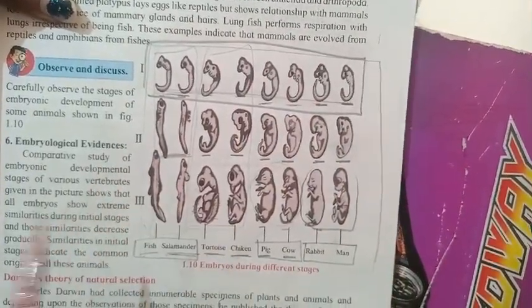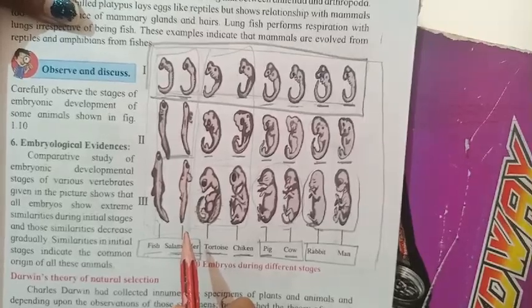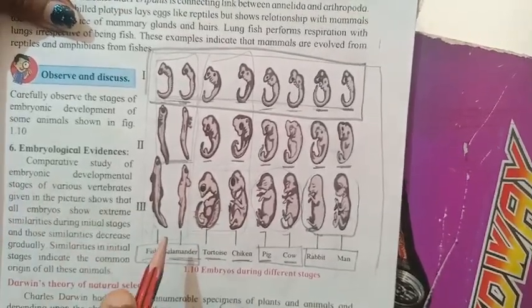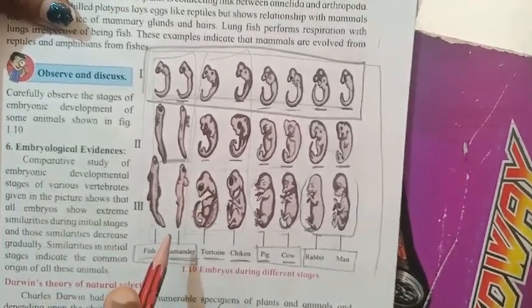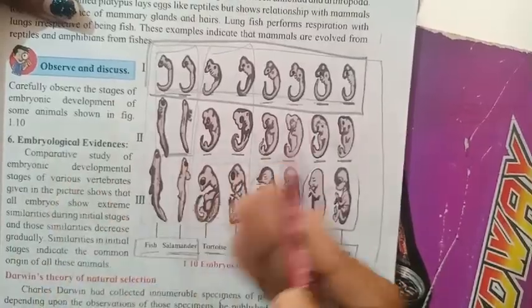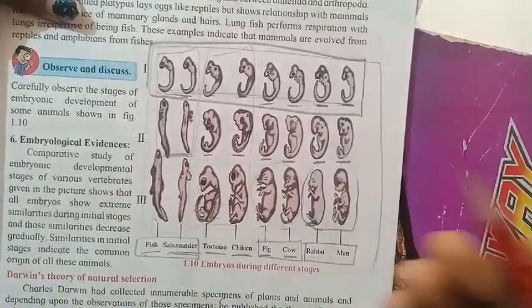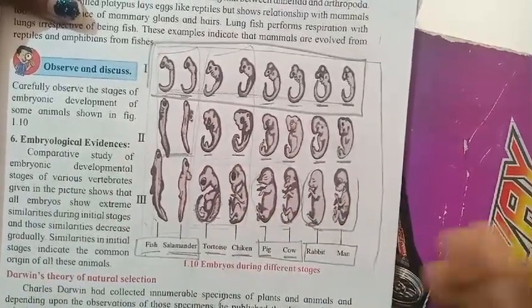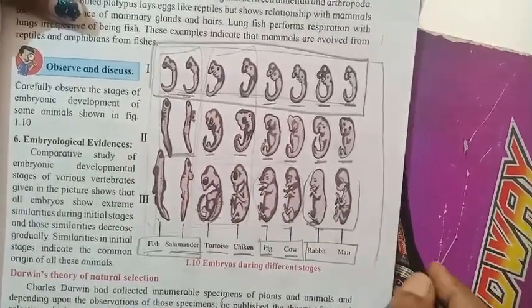What is that common origin? The first cell which evolved in sea water — from that cell, different types of animals evolved and developed.